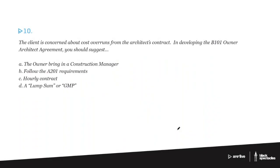The client is concerned about cost overruns from the architect's contract. In developing the B101 owner-architect agreement, you should suggest: A, the owner bring in a construction manager; B, follow the A201 requirements; C, an hourly contract; or D, a lump sum or GMP.